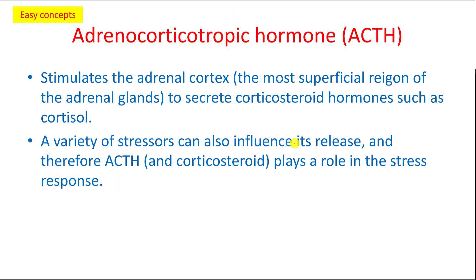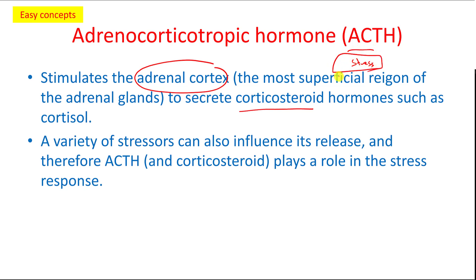Then we have the adrenocorticotropic hormone (ACTH). This targets the adrenal cortex to secrete mainly corticosteroids, like cortisol. Those are usually secreted under a stress response — if we have stresses in our body, that's what gets secreted to reduce the stress.